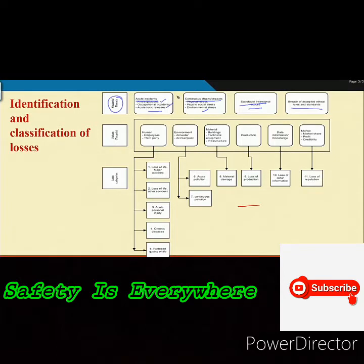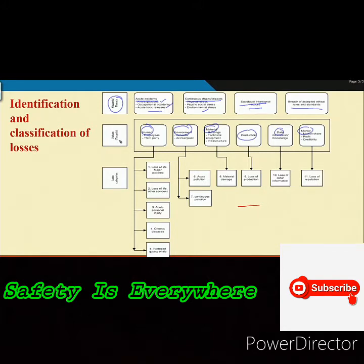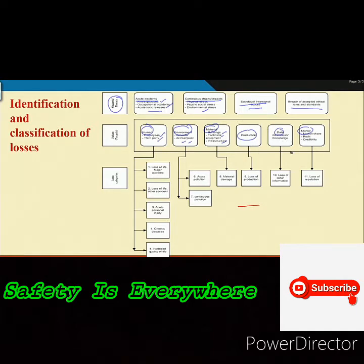When we write down the values associated with those threats with reference to targets, the targets are: human, environment, material, production, data, and market. Any kind of accident ultimately leads to loss to employees and third parties. From the environment point of view: air, water, animal, plant. From the material point of view: buildings, technical equipment, infrastructure. And there is loss of production, loss of data, information and knowledge, and loss of market share, profit, and credibility.